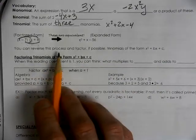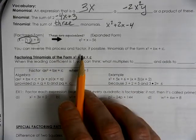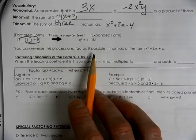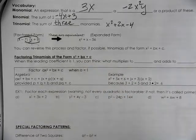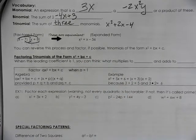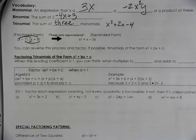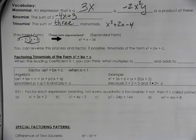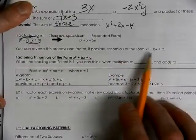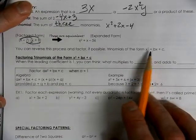We can work reverse process and factor. Sometimes it's possible, it's not always possible, but it is possible that it's not factorable. So if possible, we could factor, and we factor trinomials in this format.